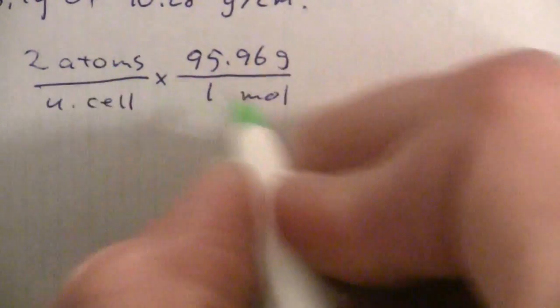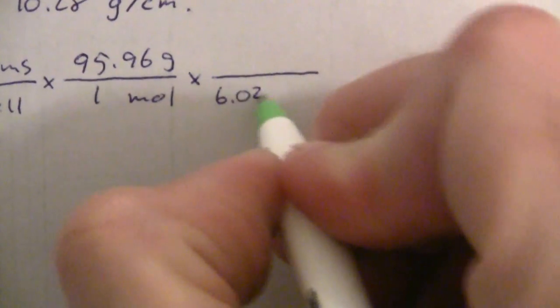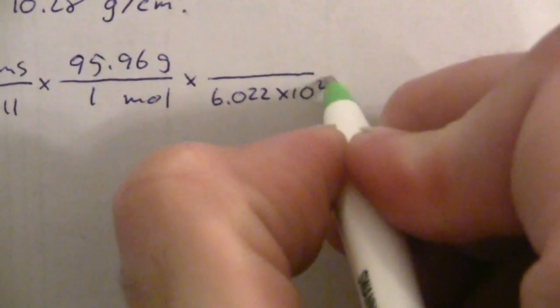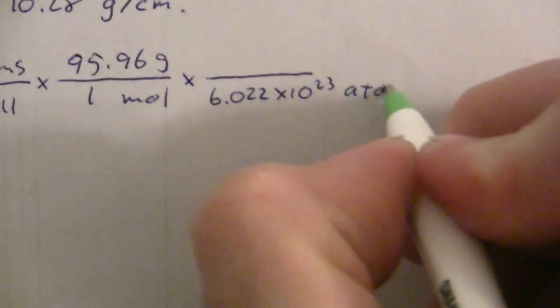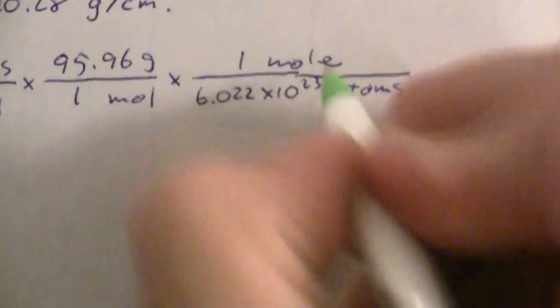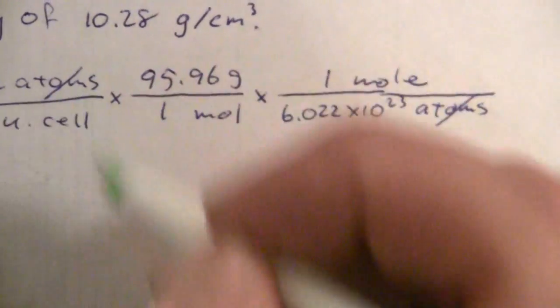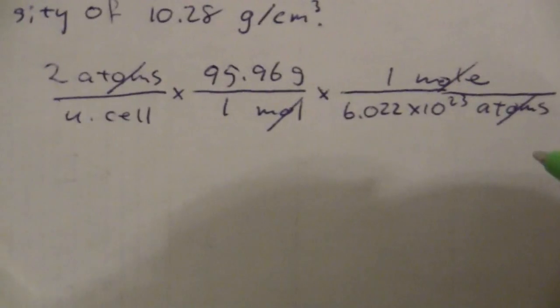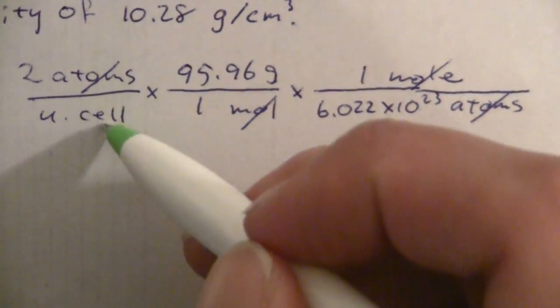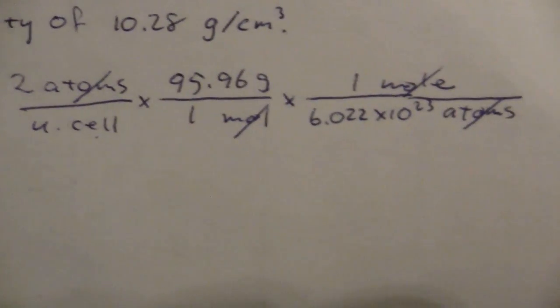Now I need atoms not moles so that's where Avogadro's number comes in. And there are 6.022 times 10 to the 23rd atoms per mole. So now my atoms cancel, my moles cancel, and I have grams per unit cell.